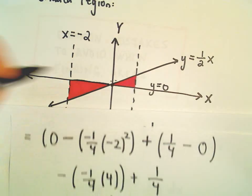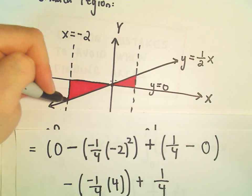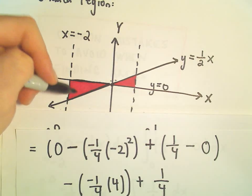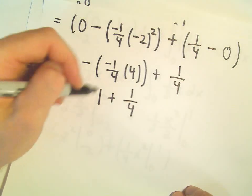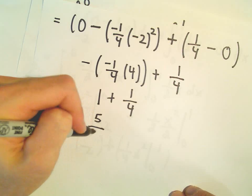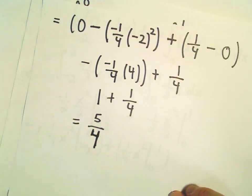And again, that sort of makes sense. Certainly, each part we should get a positive value for because we're getting an area. Certainly, the little area on the left is going to be bigger than the one on the right. So the one on the left is actually 1, the other one on the right is 1 fourth. That's going to give us an area in total of 5 over 4.